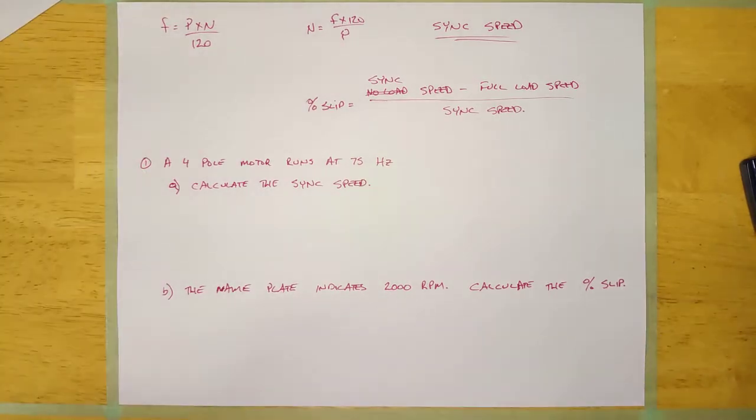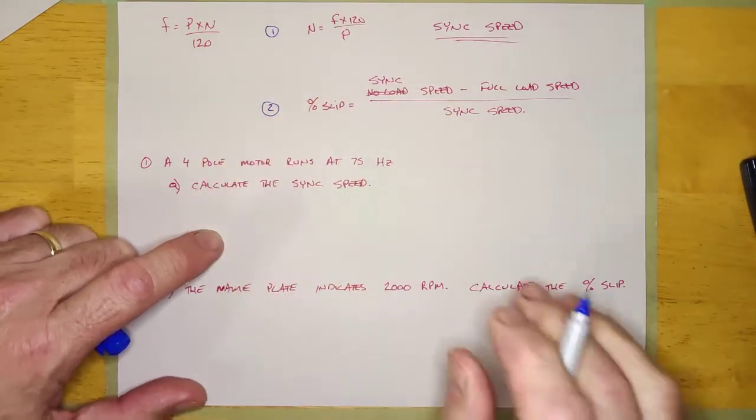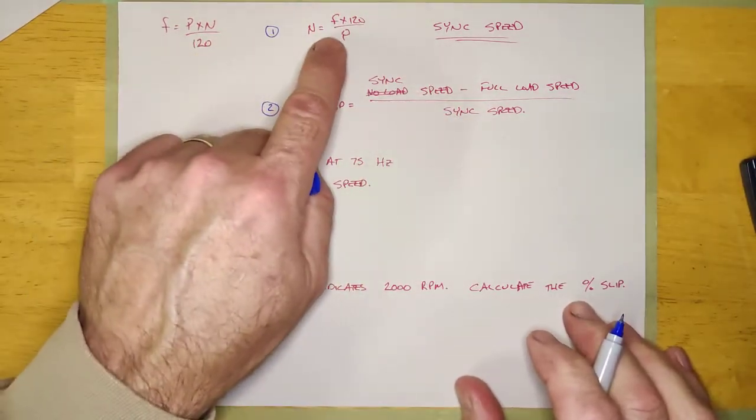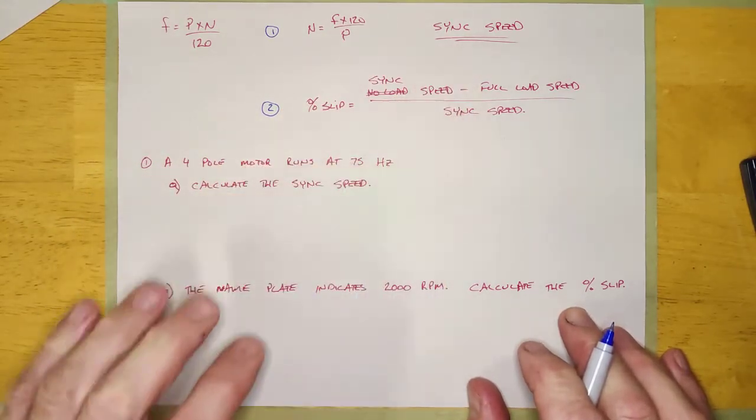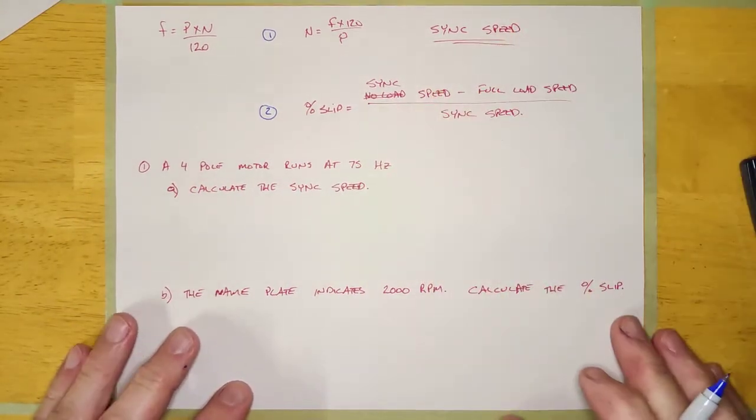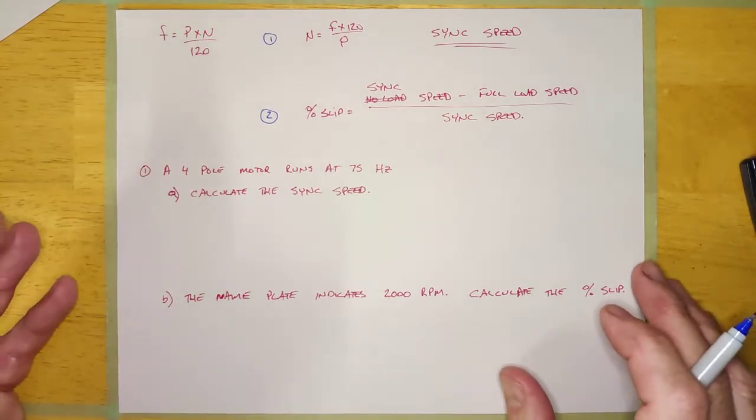There's only two. You've done both of these formulas before, I'm pretty sure. If you've had electronics at least. If you haven't, we're going to talk about them right now. So the two formulas that I want to talk about are these two right here. Now, this formula here, n is equal to f times 120 over p, what that allows you to calculate is the sync speed of a motor if you know the frequency and the number of poles.